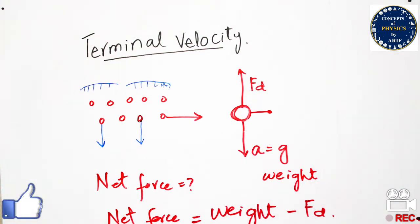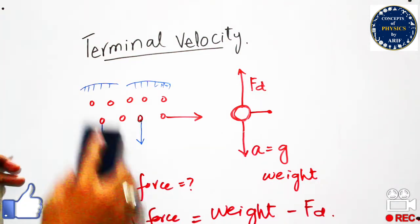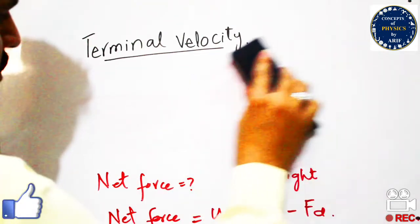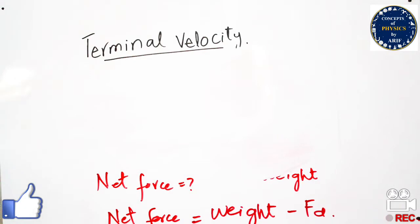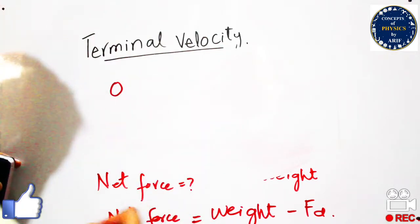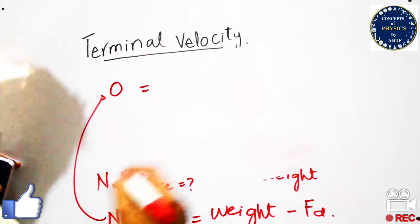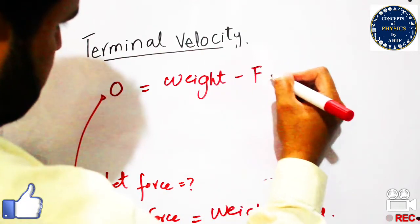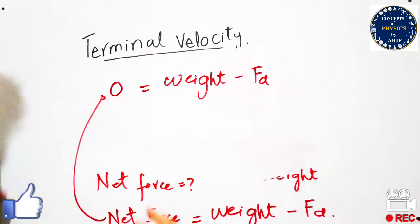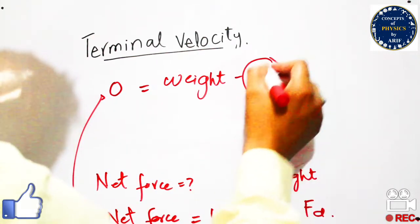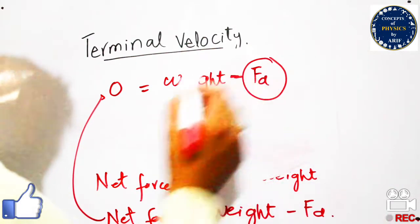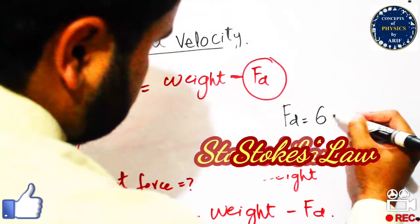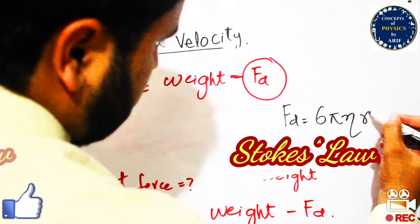Furthermore, we consider that this net force is zero because the particle is suspended in the air and not moving. So: zero = weight minus drag force (Fd). This drag force formula comes from Stokes' law, which we have discussed previously.